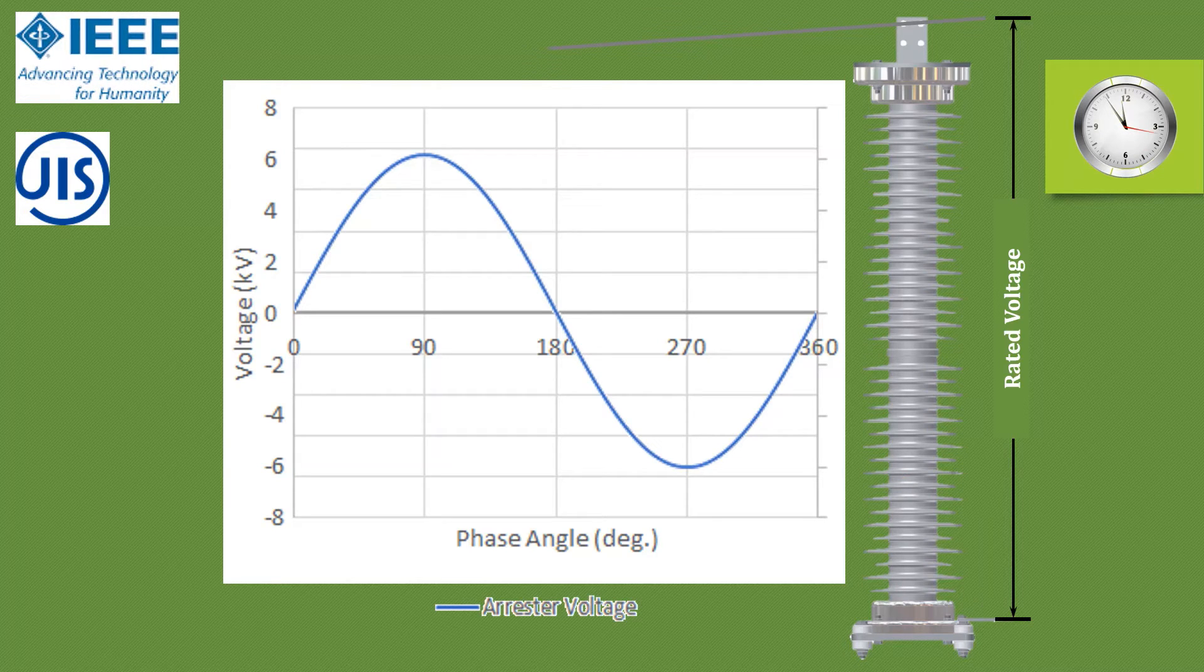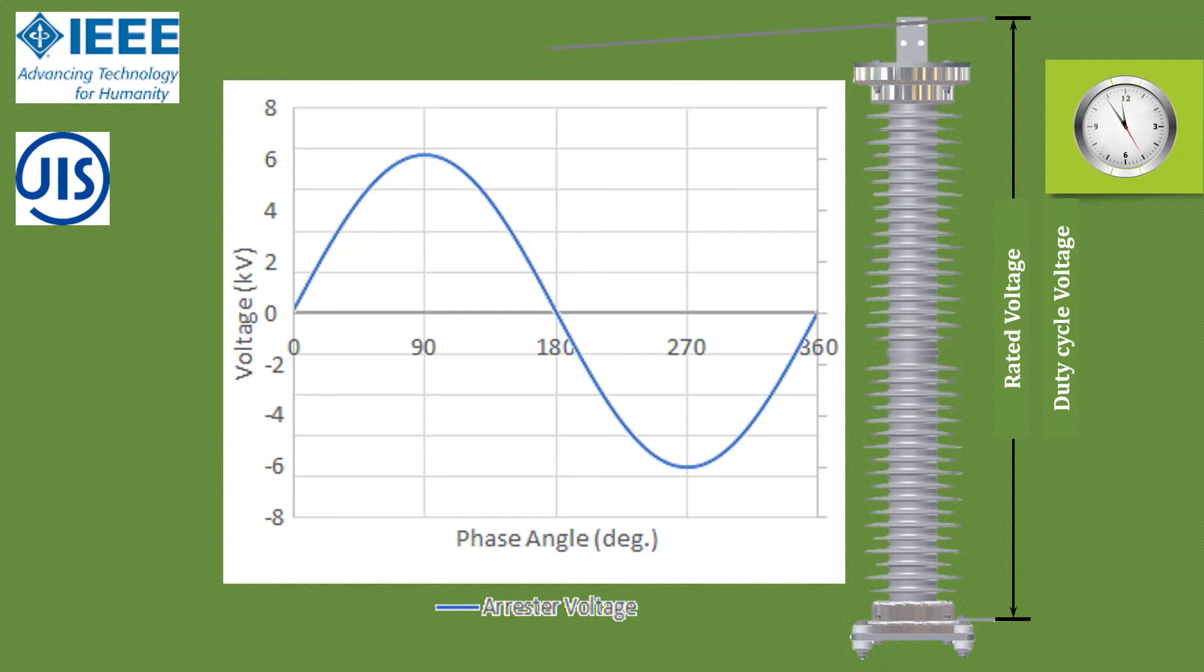While in IEEE, it is termed as duty cycle voltage and is defined as maximum permissible voltage between arrestor terminals at which an arrestor is designed to perform its duty.